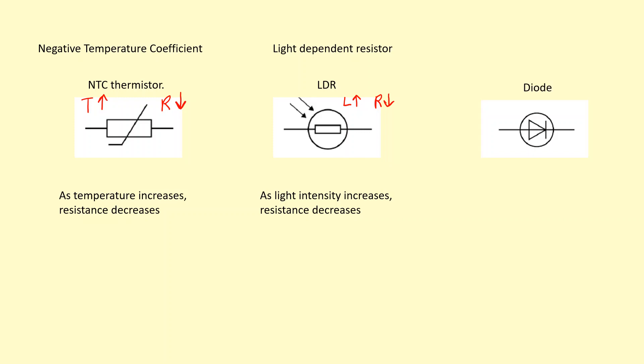And finally, we have the diode, which we'll come on later. It just only lets current flow in one direction.